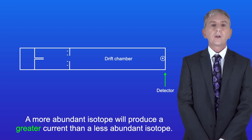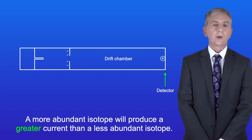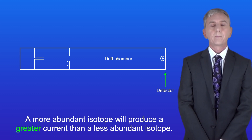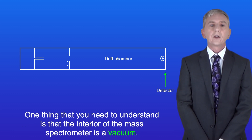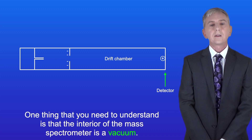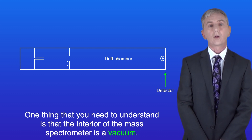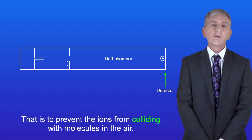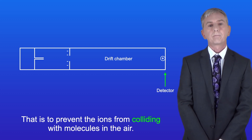A more abundant isotope will produce a greater current than a less abundant isotope. One thing you need to understand is that the interior of the mass spectrometer is a vacuum, and that's to prevent the ions from colliding with molecules in the air.